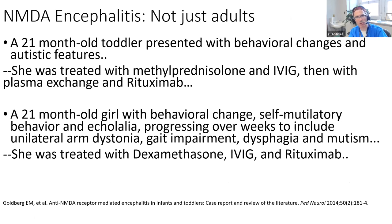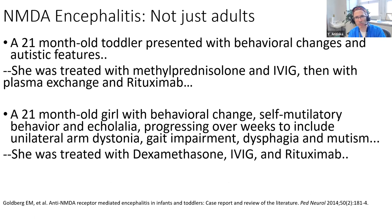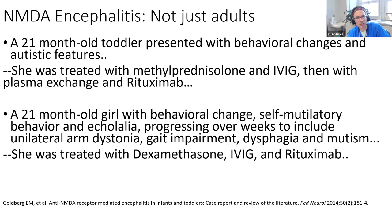One example from another institution: a toddler with behavioral changes and autistic features received methylprednisolone, IVIG, plasma exchange, and then rituximab. Another case was a 21-month-old with self-mutilatory behavior that worsened over weeks, then developed dystonia, gait impairment, and dysphagia - treated with dexamethasone, IVIG, and rituximab. This can be an extremely severe phenomenon in the pediatric population.